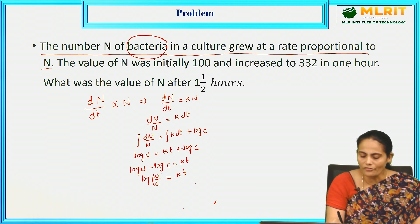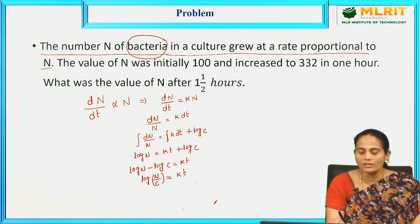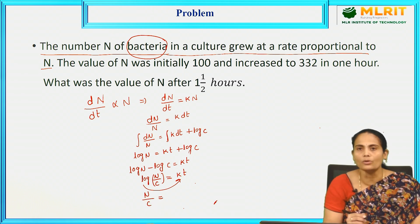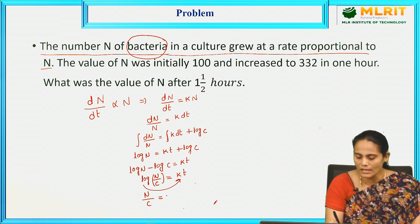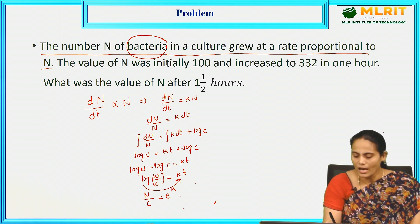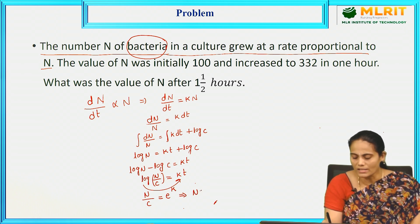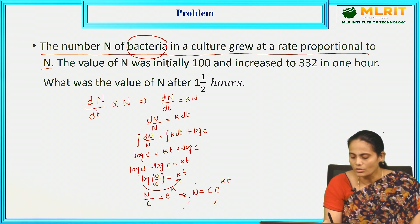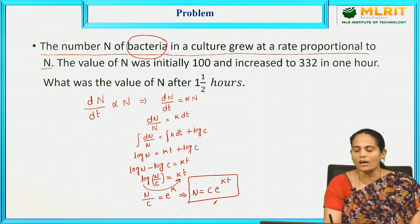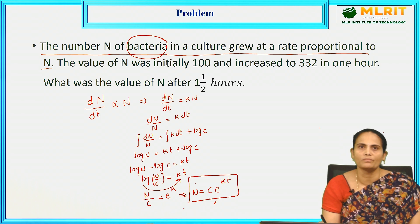Using the formula log a − log b = log(a/b), we get log(N/c) = kt. Removing the logarithm: N/c = e^(kt), which gives N = c·e^(kt). This formula gives the number of bacteria when the time is given.